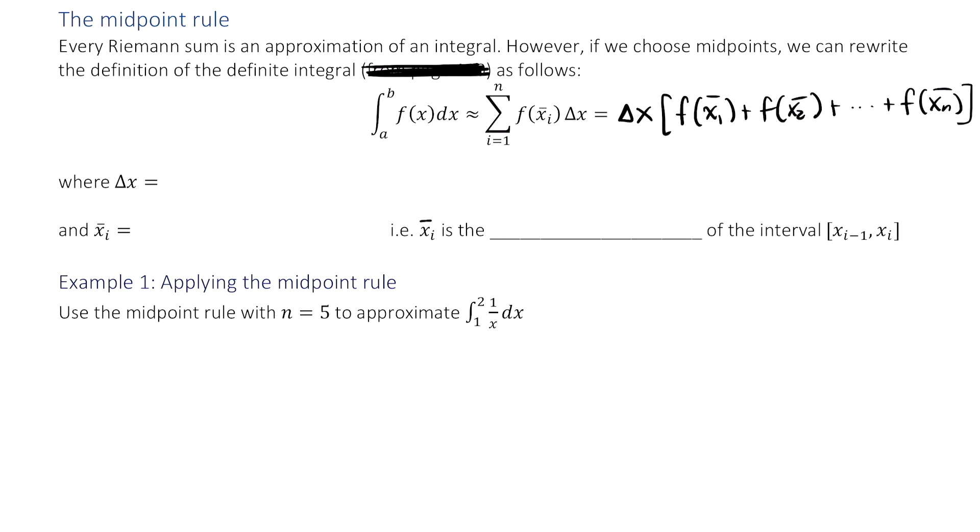Now, what are all these symbols here? What are all these x bar, delta x? Well, like in previous videos, we said delta x is b minus a over n. So this is the width of the rectangles. And remember, we have n rectangles. And on our interval, a is the lowest x value, b is the max value, and n is the number of rectangles.